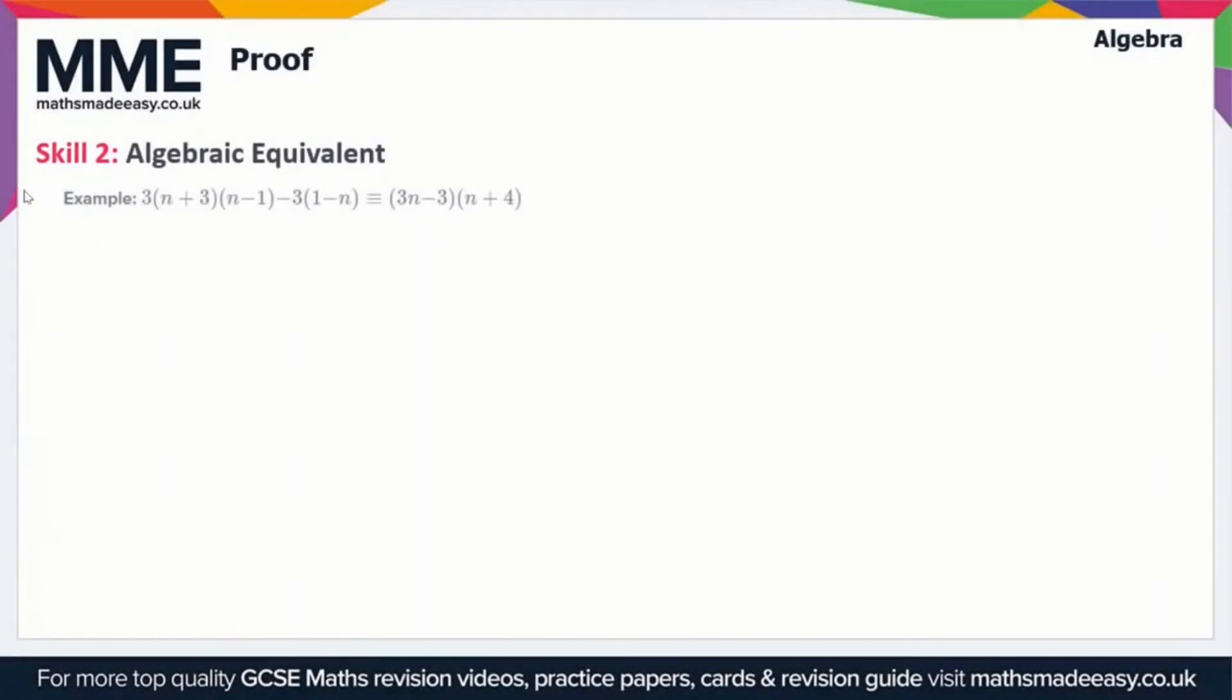So the next type of proof that we'll look at is algebraic equivalent. So here we've got an expression where we've got two sides and we have to show that they're equal to one another or equivalent to one another. So that's what this sign in the middle is, it's just an equivalent sign but you can treat it the same as an equal sign.